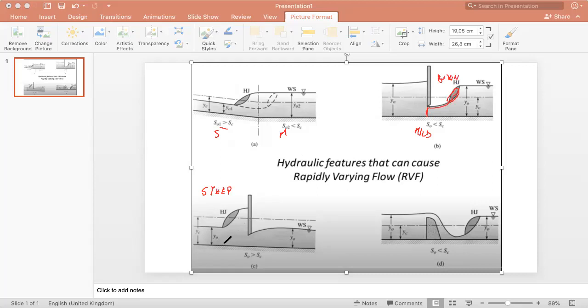If the slope is steep, the water will arrive with a height of uniform flow smaller than the critical height, and it will impact the gate and the hydraulic jump will happen upstream on the left of the gate.